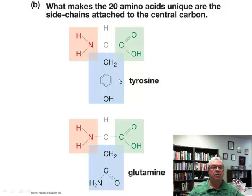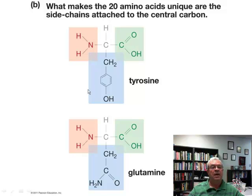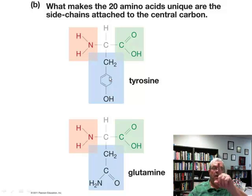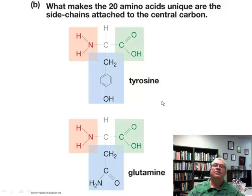What are some of these R groups? Here's a complex one — we'll talk about that in the recap. Tyrosine is one of the twenty amino acids in proteins; we can see all the standard parts plus the R group of tyrosine. Down here we see all the standard parts and the R group for glutamine. You don't have to learn either of those — I'm going to ask you to learn just one: the very simplest R group of the simplest amino acid. We will look at tyrosine, and that's it for this video. Let's recap with a dry erase board video.